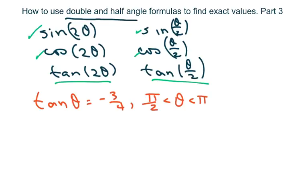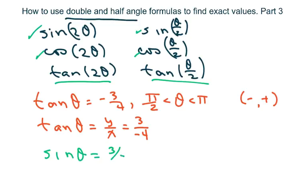And that means my y is positive and my x is negative. I know tan of theta is y over x. So I know my 3 is positive and my x is going to be negative. The negative actually goes with the 4 here. That means my sine of theta is 3 fifths and my cosine of theta is negative 4 fifths.